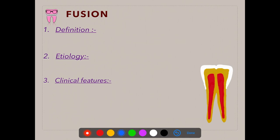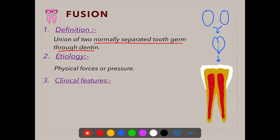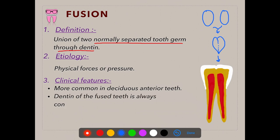Coming to the next developmental disturbance affecting the shape of the tooth — fusion. Fusion is a union of two normally separated tooth germs through the dentin. There are two normally separated tooth germs growing side by side, but they tend to fuse through the dentin. The cause is physical forces or pressure, and it is more common in deciduous anterior teeth.